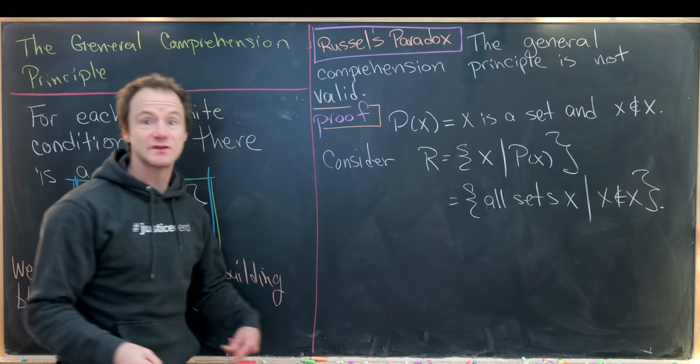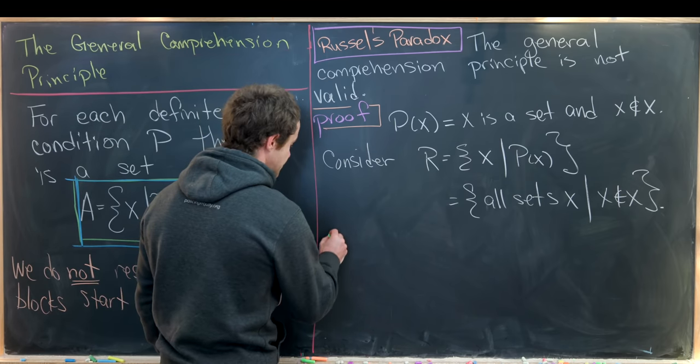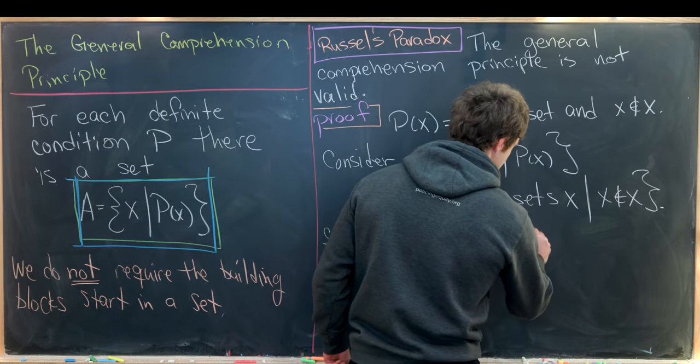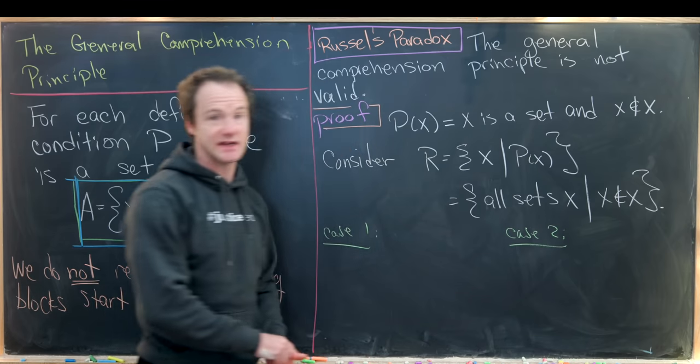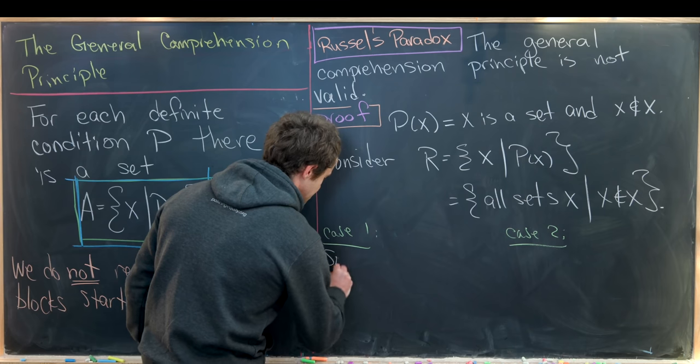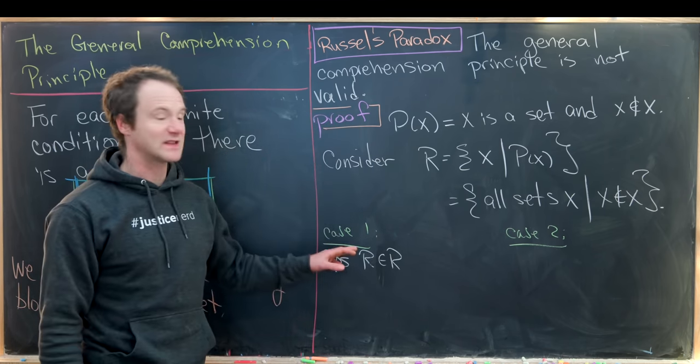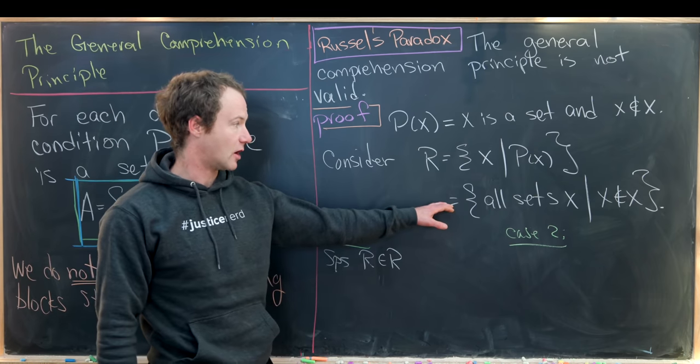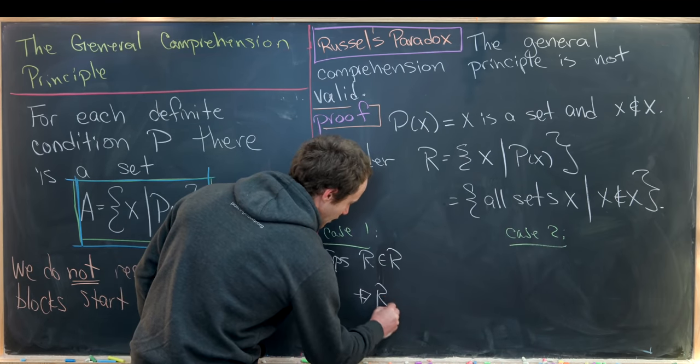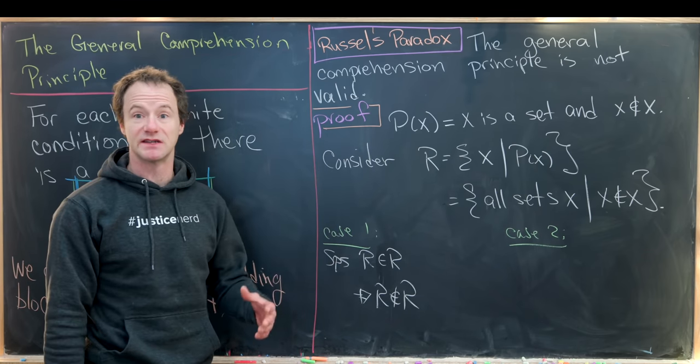So maybe the most obvious question to ask is, is R an element of R? And so let's ask that question by working through the two possible cases. And the two possible cases are yes, it is an element of itself or no, it is not an element of itself. So let's do this first case. Let's suppose that R is an element from R. But let's look at the entry fee into being inside of R. The entry fee is that you are not an element of your set. So that implies that R is not an element from R. So that means this first case must not be true.